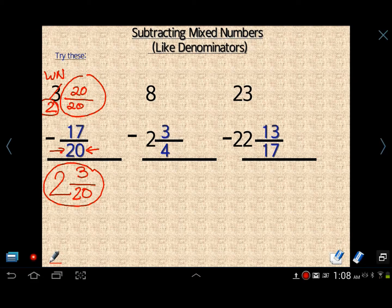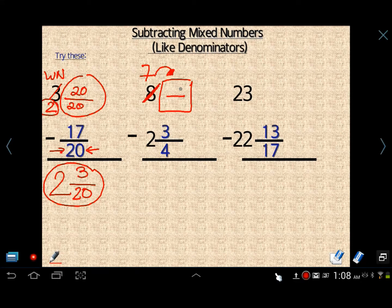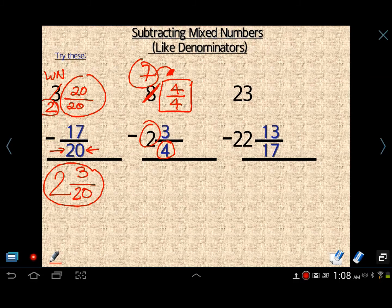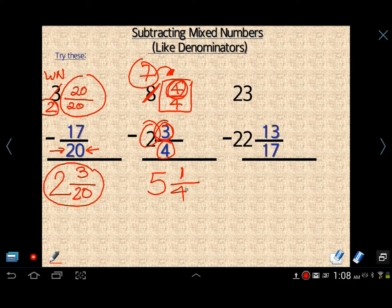Same thing right here. Let's go ahead and borrow from the 8. We need something here. We just can't drop down the 3 4ths. Remember that. 8 turns into a 7 because we're borrowing 1. Now I need to give 1 back in the form of a fraction. 1 would be really easy to use 4 4ths because the denominator down here is 4ths. So everything's there. All the necessary parts of the problem are there. 7 minus 2 is 5. 4 minus 3 is 1. And then don't add or subtract denominators. So 5 and 1 4th.